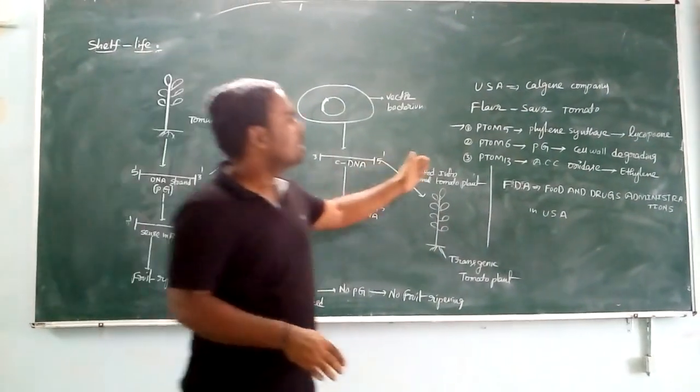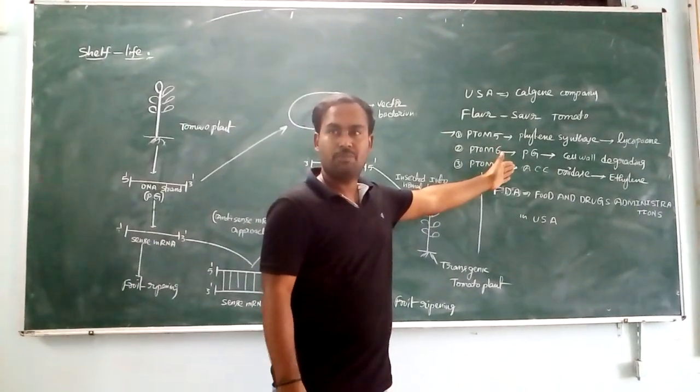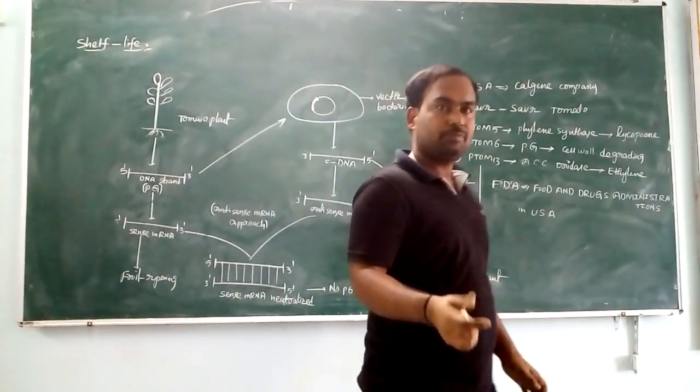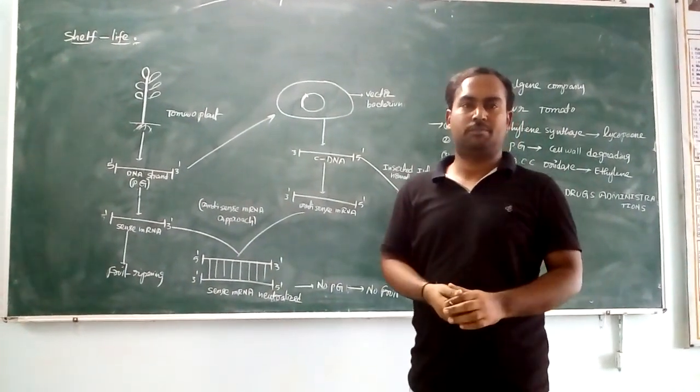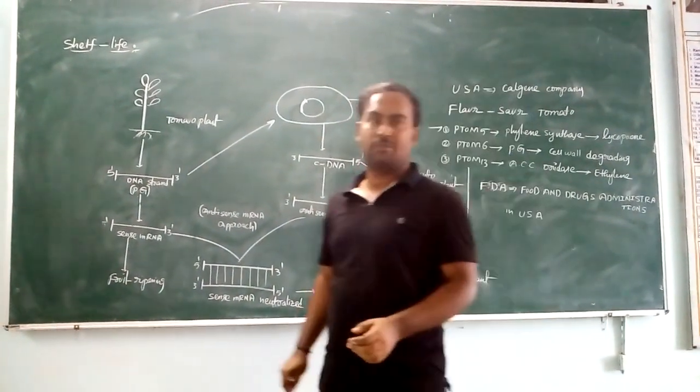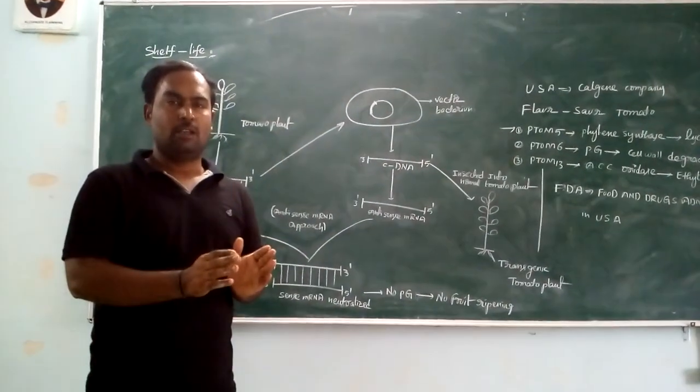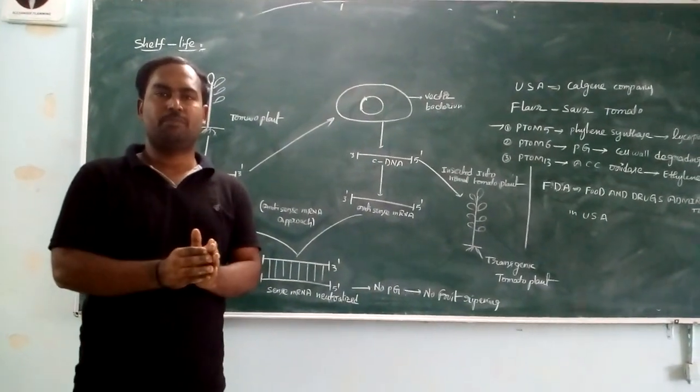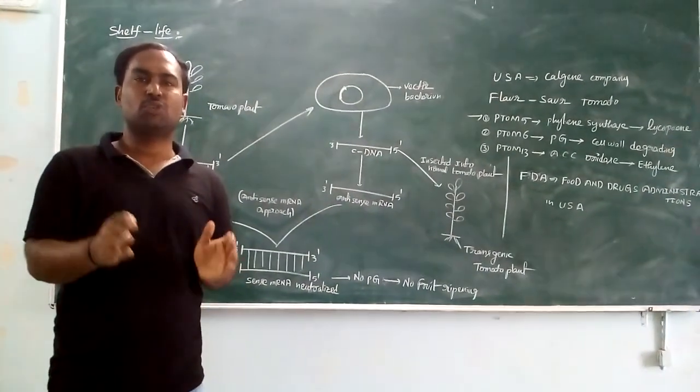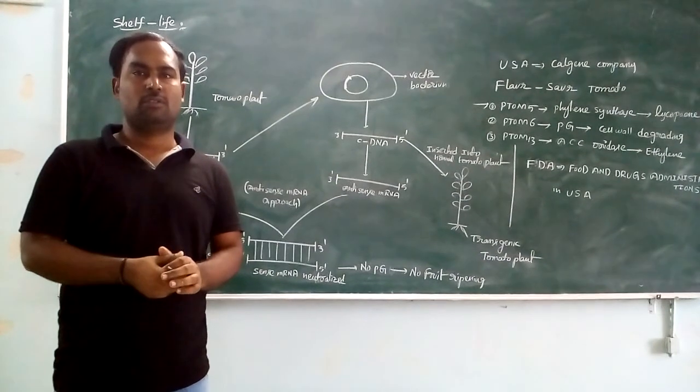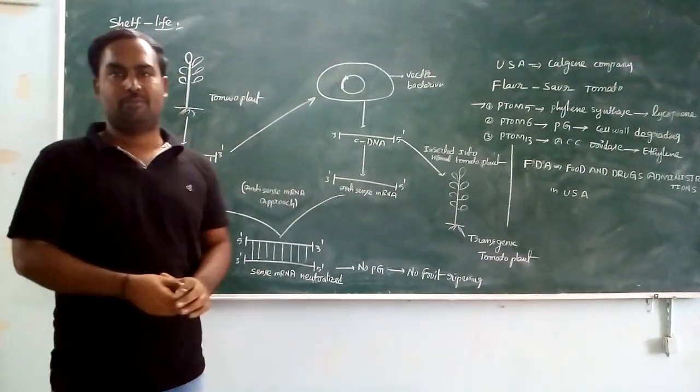This softening occurs in the presence of Polygalacturonase enzyme. The shelf life remains smoother. What is the main advantage of delaying fruit ripening? Long transport distance may be achieved easily without damaging the fruit. So this is about shelf life. Thank you.